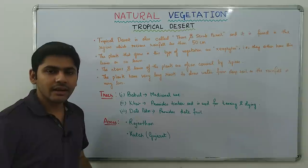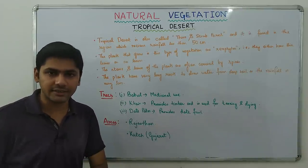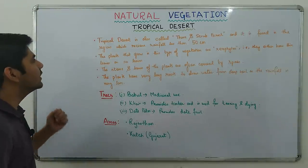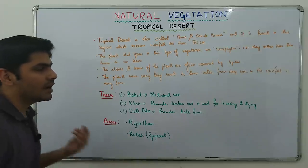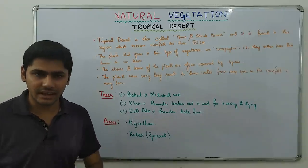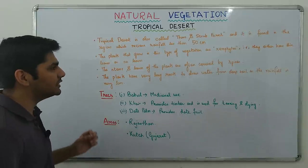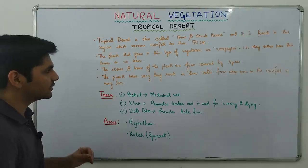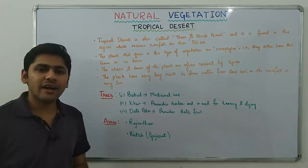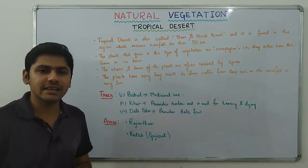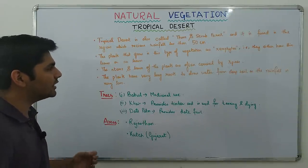Moving on to Tropical Desert, also called Thorn and Scrub Forest. This vegetation is found in regions receiving less than 50 centimeters of rainfall. The plants that grow here are xerophytes — plants that adapt to grow in regions of very little water — and they either have thin leaves or no leaves at all.